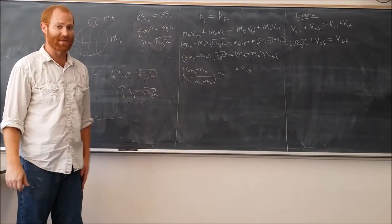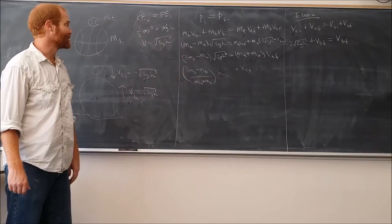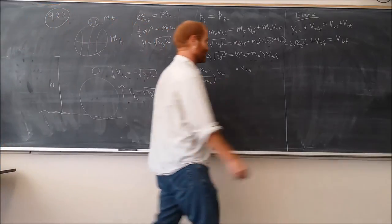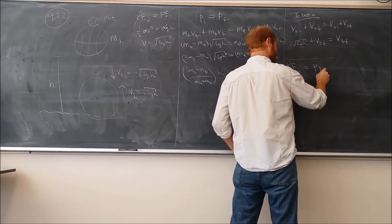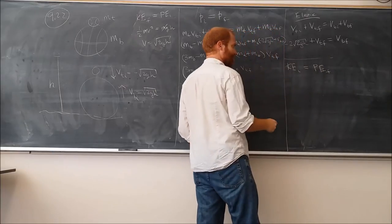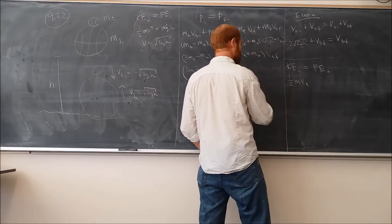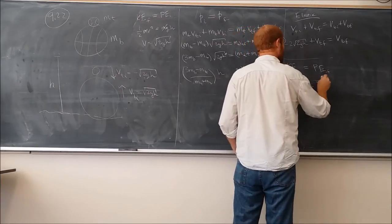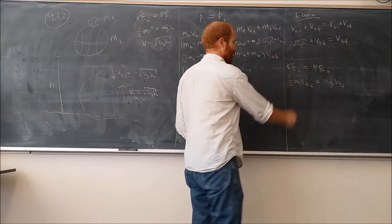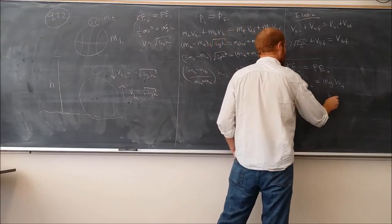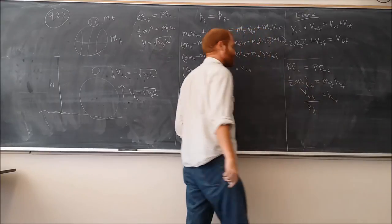Now what we're interested in figuring out is, okay, if that's the velocity of the tennis ball, how high does it rise? And in order to do that, we can employ energy conservation again. It's going to be the same kind of equation, except that now we can say that the initial kinetic energy of the tennis ball is equal to the potential energy that it gains when it rises to that height. So the initial kinetic energy of the tennis ball is going to be 1/2 M times that VTF squared. And the potential energy that it reaches is going to be Mg times whatever final height that it gets to. The mass cancels.